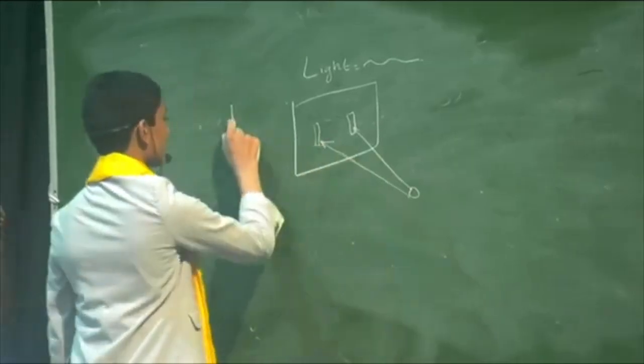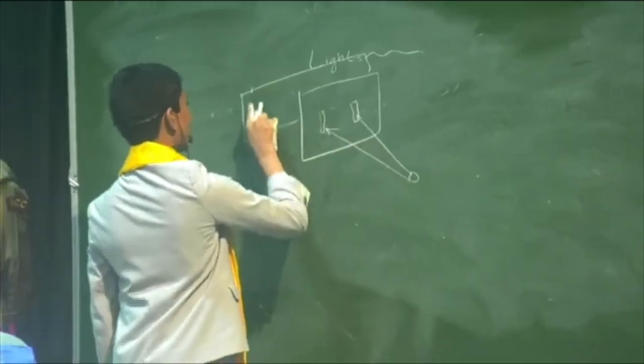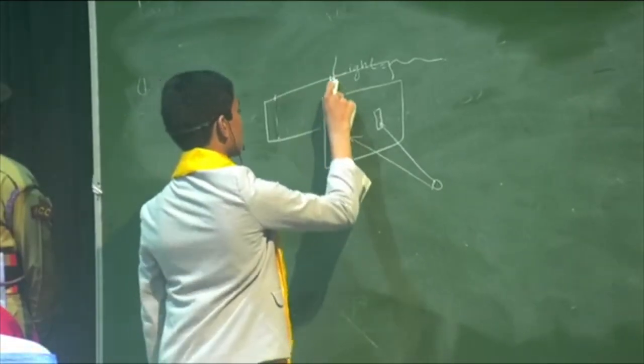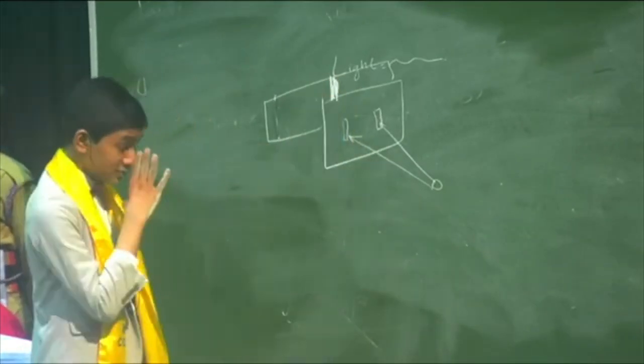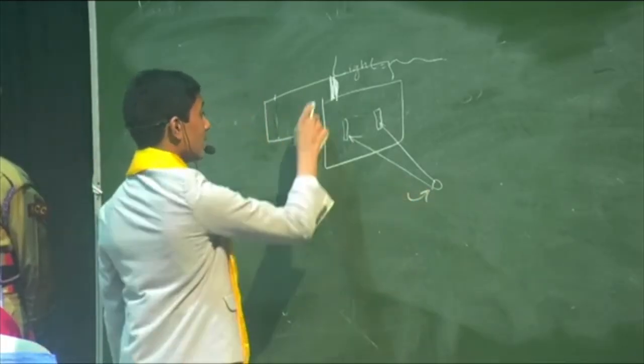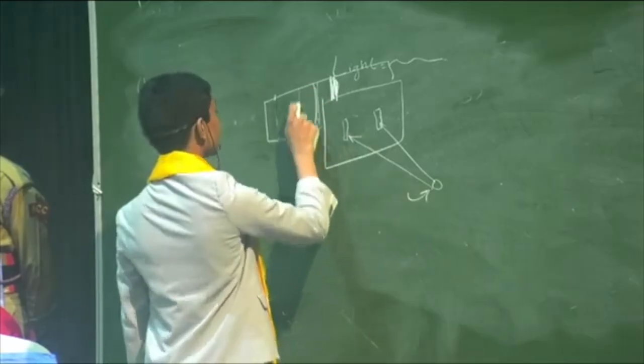In that, it gave the same interference patterns as a particle would. Actually, it's the opposite. Light was deemed a particle at that point, but it gave off the interference pattern that a wave would.